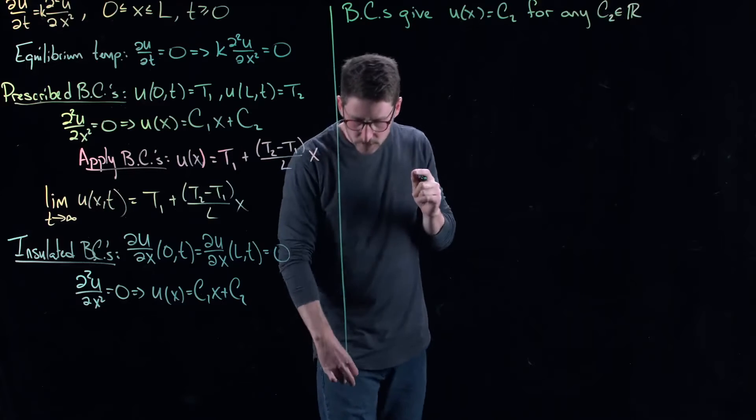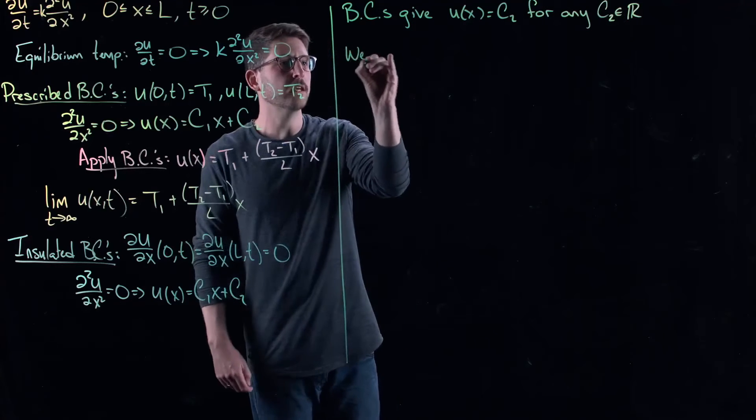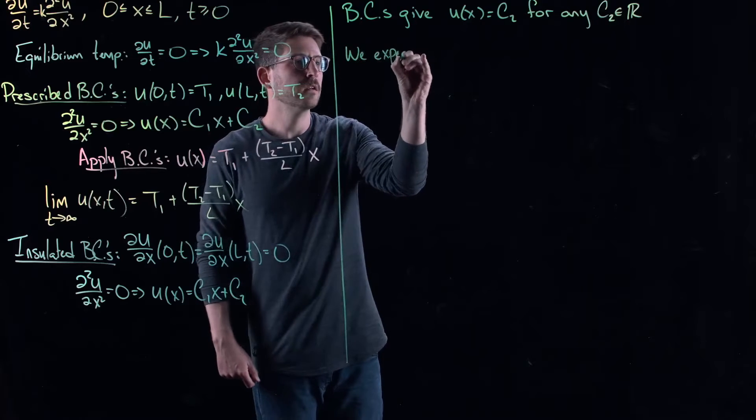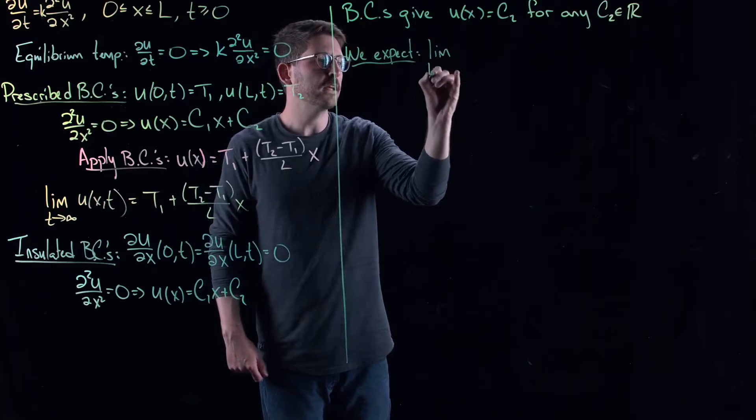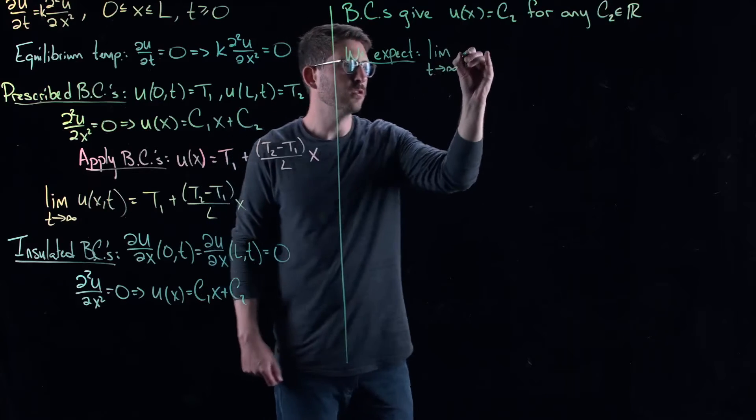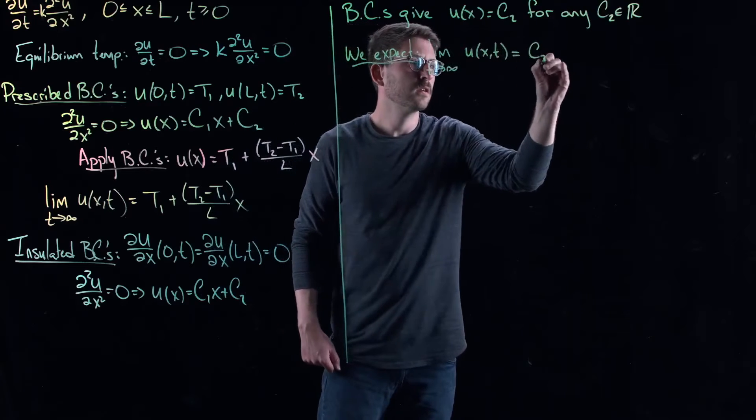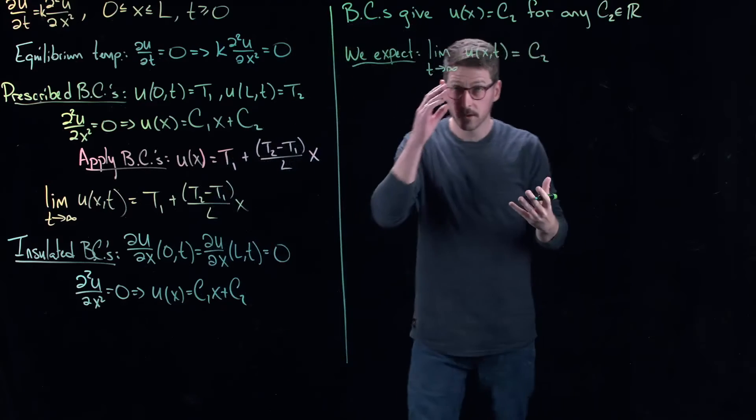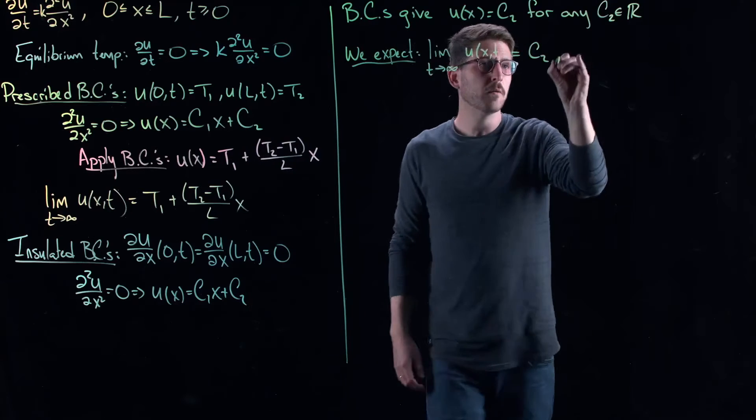Okay, so that's very strange. Because, okay, based on my little intuition here, we expect, well, what do we expect? We kind of expect that the temperature settles into this, one of these equilibrium distributions. We just don't know which one. But which one?